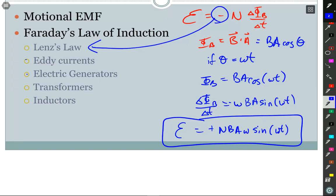Electric generators are an example of Faraday's law. You take a loop and rotate it in a magnetic field - the flux B dot A constantly changes because the angle between them is changing. Flux equals BA cosine of omega t. Taking the time derivative, the change in flux over change in time is minus omega BA sine of omega t. So the induced voltage is N times BA omega sine of omega t. That's the equation for the voltage an electric generator produces. The most difficult part was knowing the strength of the magnetic field.